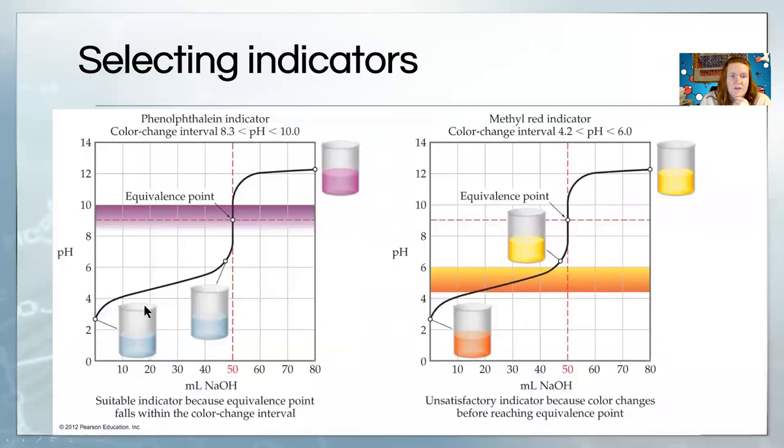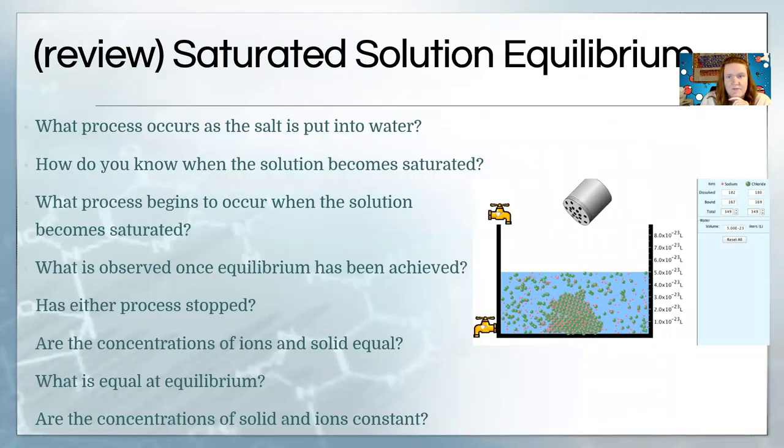If we're doing a strong base titrated with a strong acid, the pH at the equivalence point will be seven, in which case neither one of these indicators would be ideal. Here's another example of a titration where you're starting with a weak acid and its pH changes past neutral, somewhere close to nine. That means phenolphthalein is a really good choice of an indicator. I would not use methyl orange because it would change in the buffer zone. Selecting the right pH for an indicator will give you a great endpoint. Otherwise, it's not very helpful.